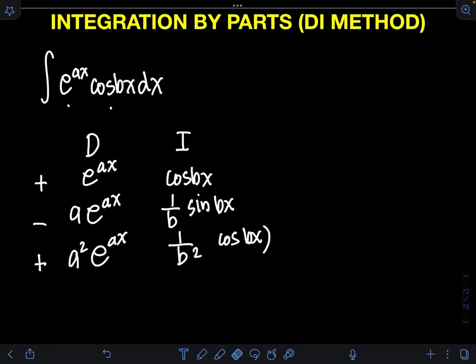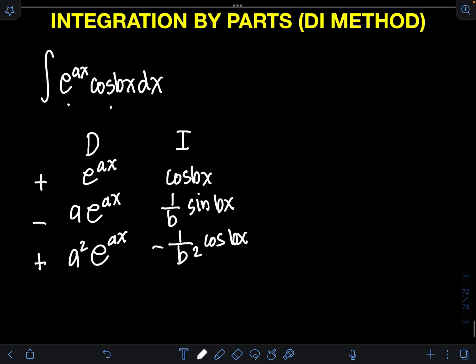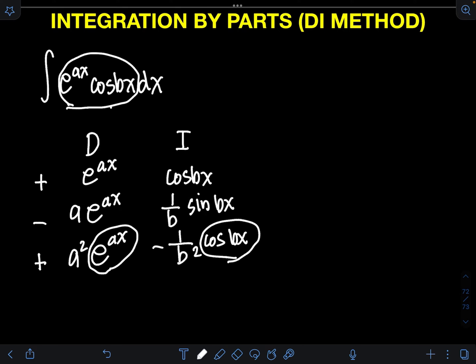I stopped integrating and differentiating at this row because if you multiply e raised to ax times cosine bx, it is the same as the original integral e raised to ax cosine bx. That is one case when you need to stop differentiating and integrating each of the functions in the DI column.